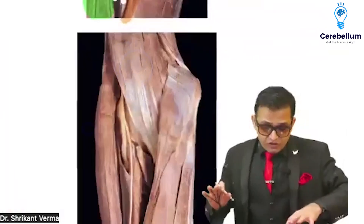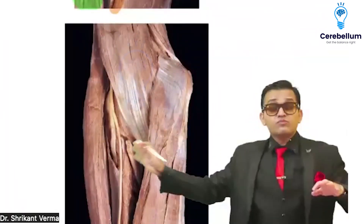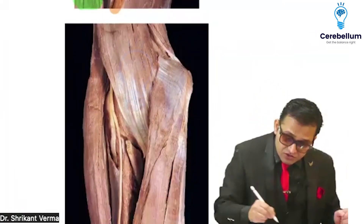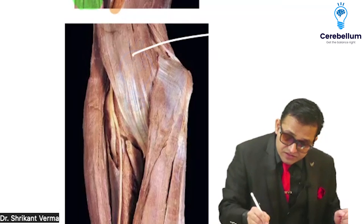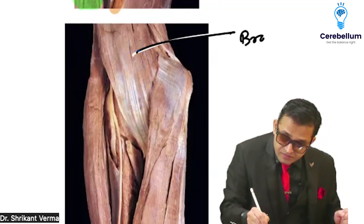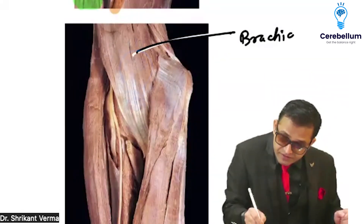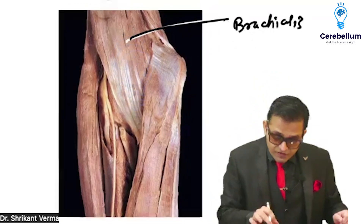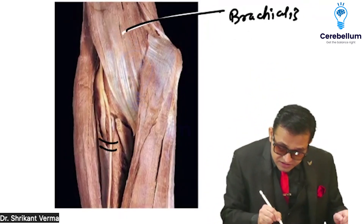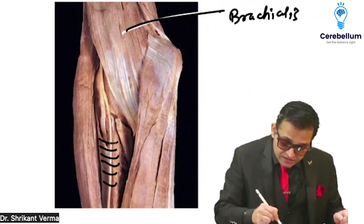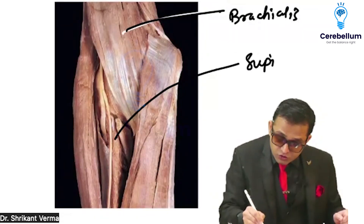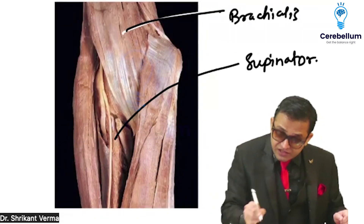Now, removing the superficial structures, you can observe the tendon and this muscle here is brachialis. Looking deeper, you can see one muscle winding over the radius — at the floor you can see the supinator. What are the muscles making the floor of the cubital fossa?